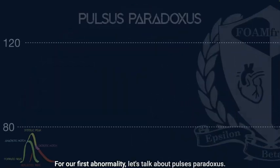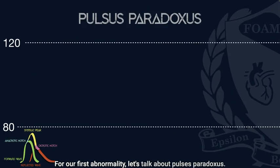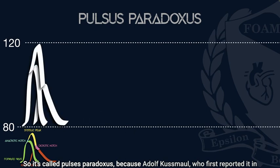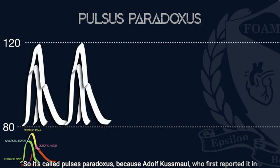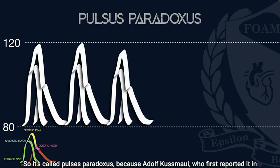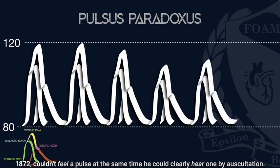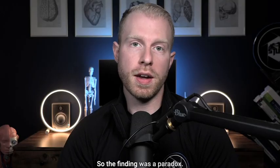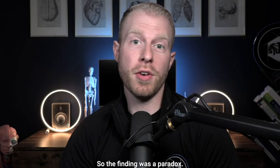For our first abnormality, let's talk about pulsus paradoxus. It's called pulsus paradoxus because Adolf Kussmaul, who first reported it in 1872, couldn't feel a pulse at the same time he could clearly hear one by auscultation. So the finding was a paradox.